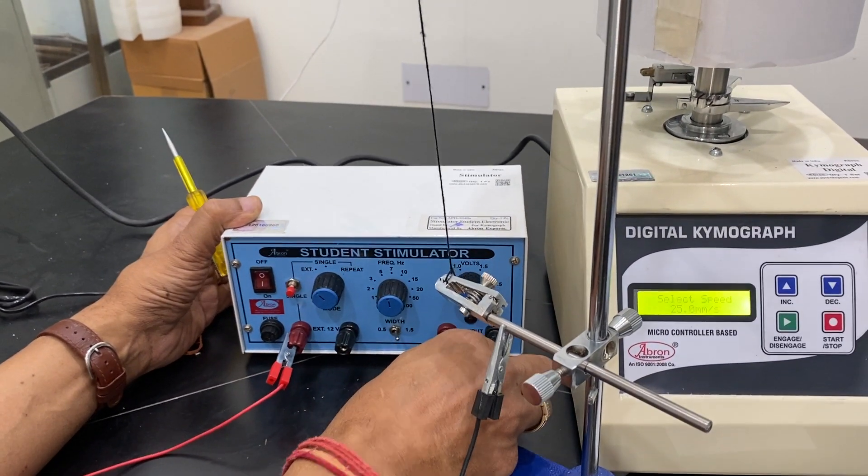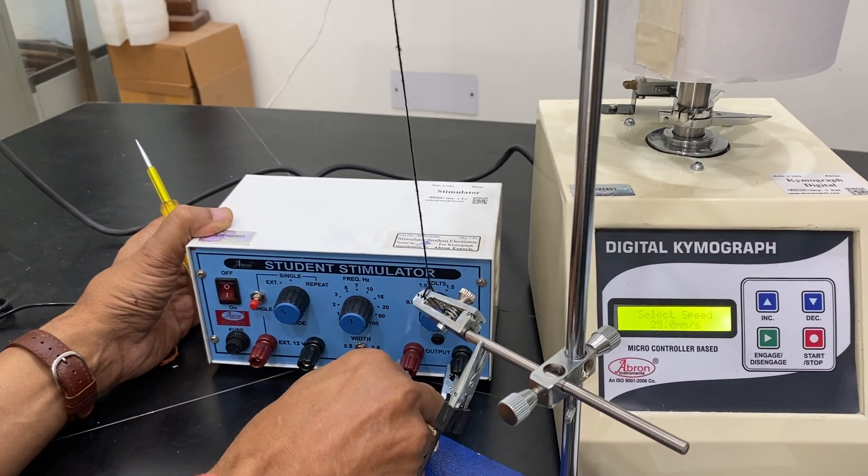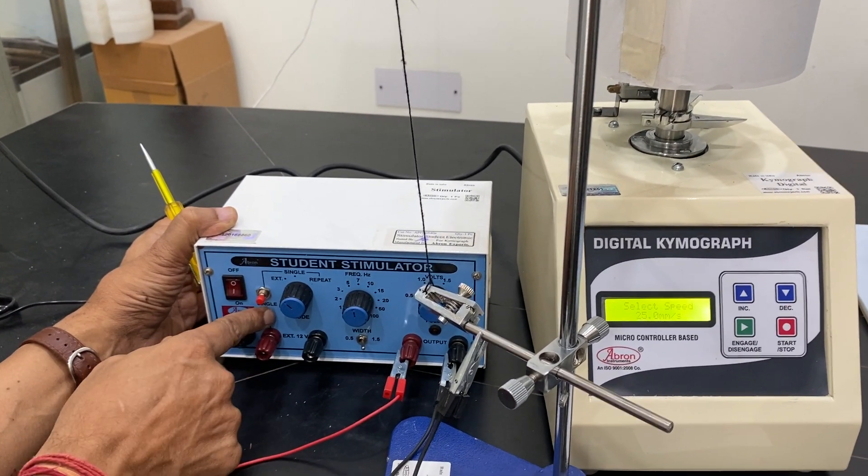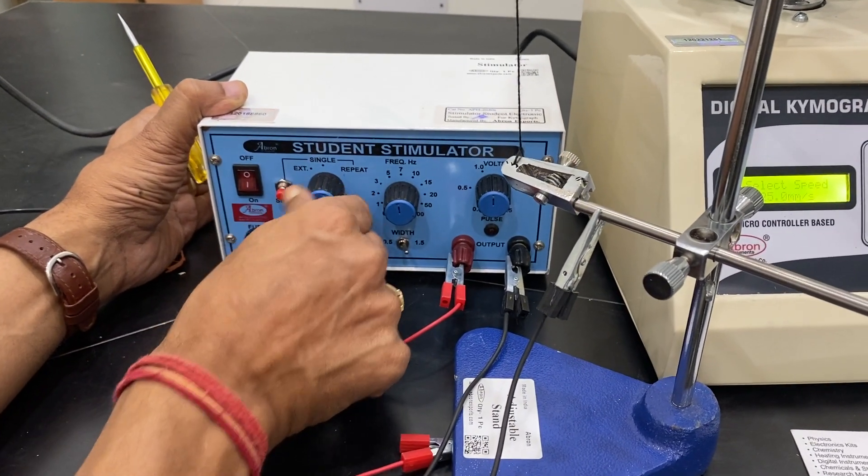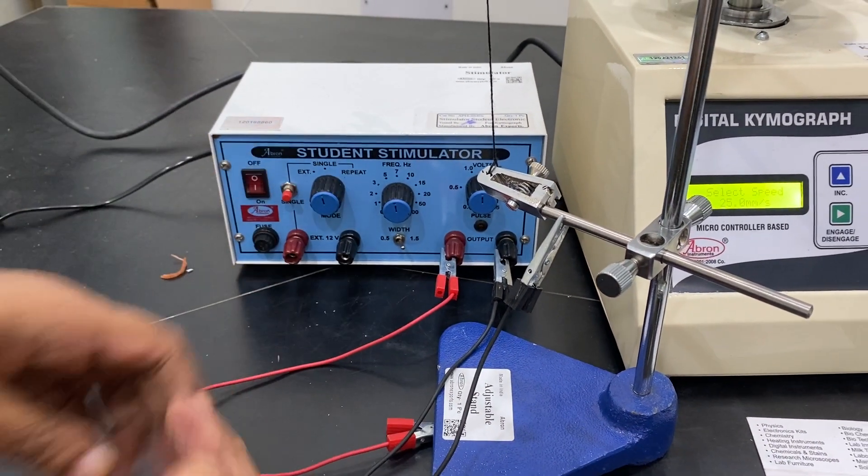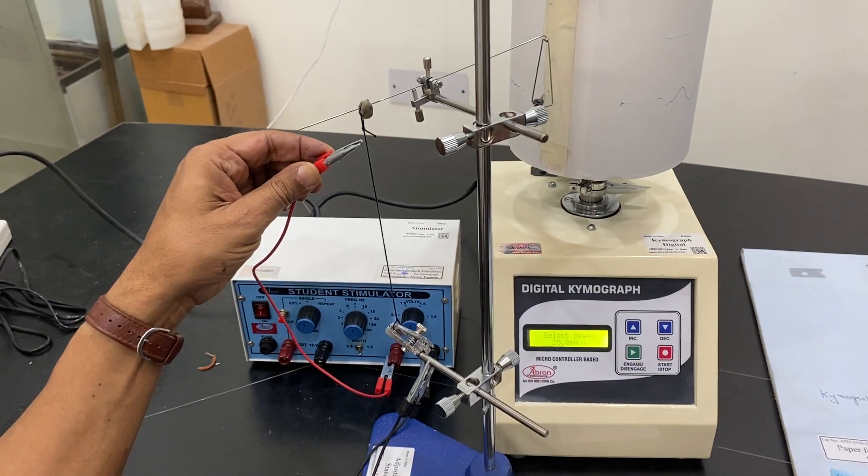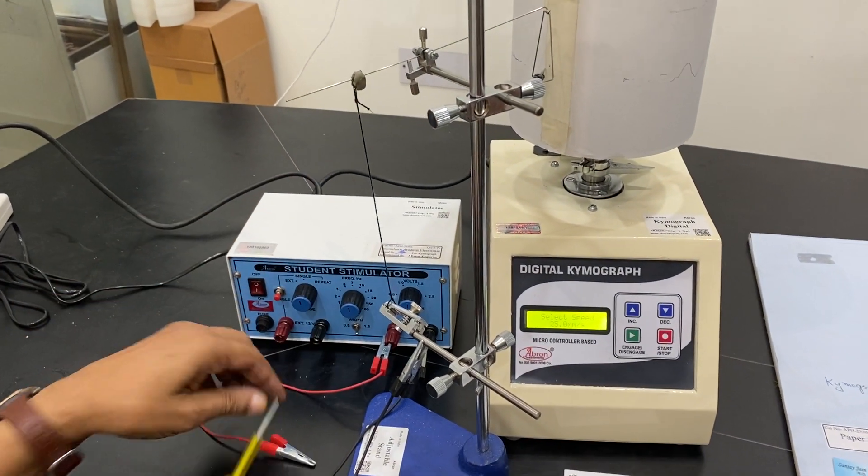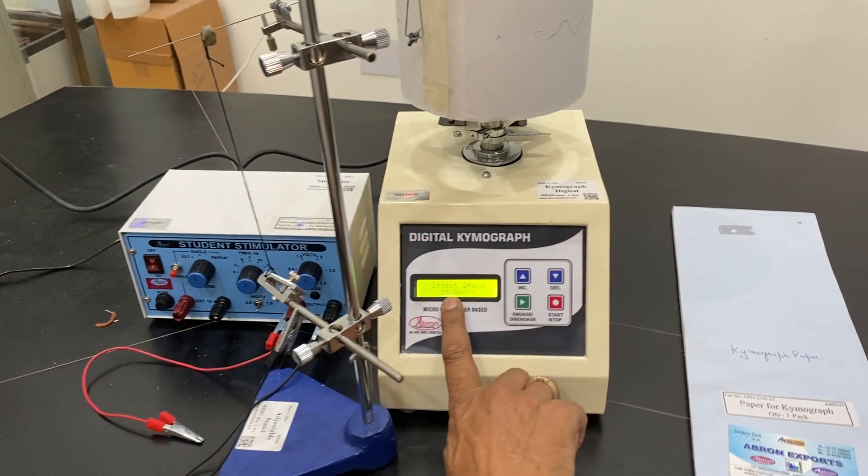I can give you an output from here, connecting to this, and then a single pulse can be given, repeated pulse can be given, or I can give a single pulse using this muscle. I can touch it and it will give a pulse. Now I have done the experiment using a lower speed.